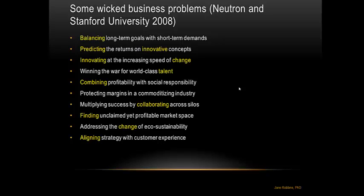Here are some of the wicked problems that plague business according to a 2008 survey by Neutron and Stanford University. You can see how many of them connect to questions of innovation — difficult things like prediction, innovating, change, combination or synthesis. We'll talk about this more. Collaboration, as we've talked about before. Change again.